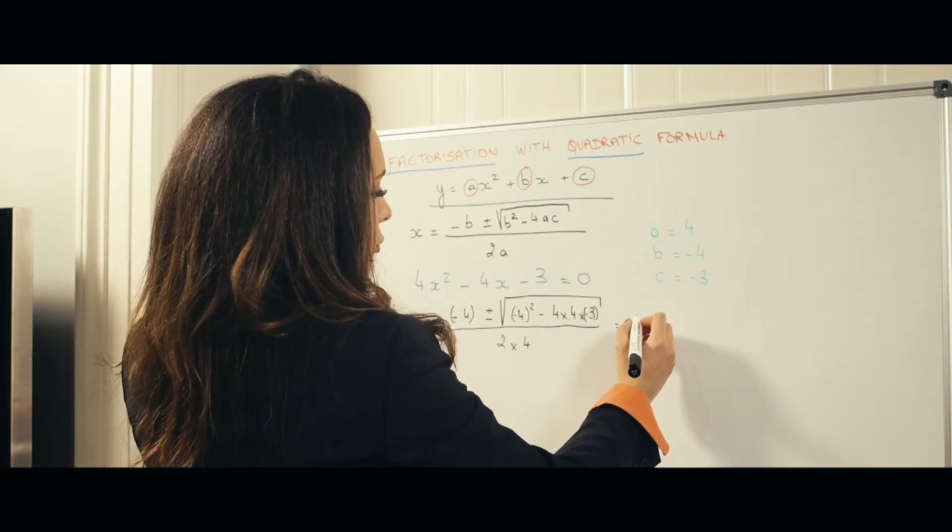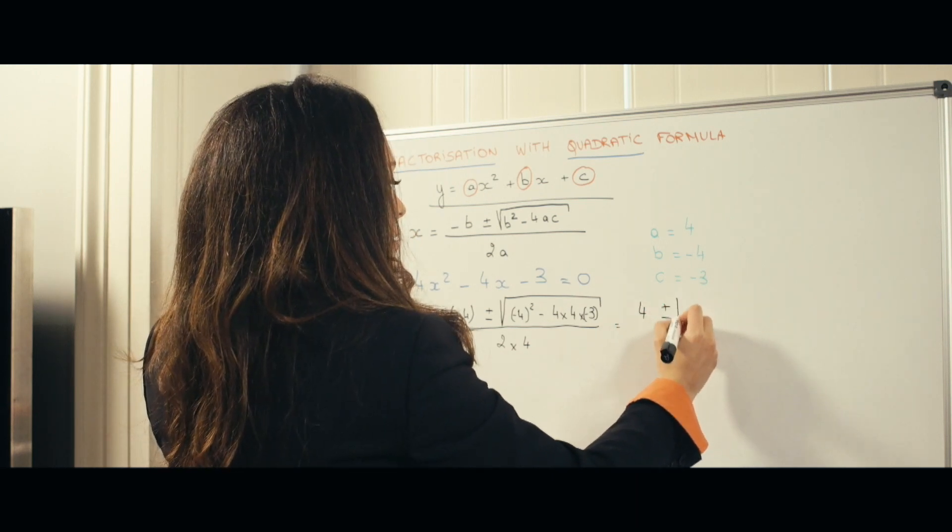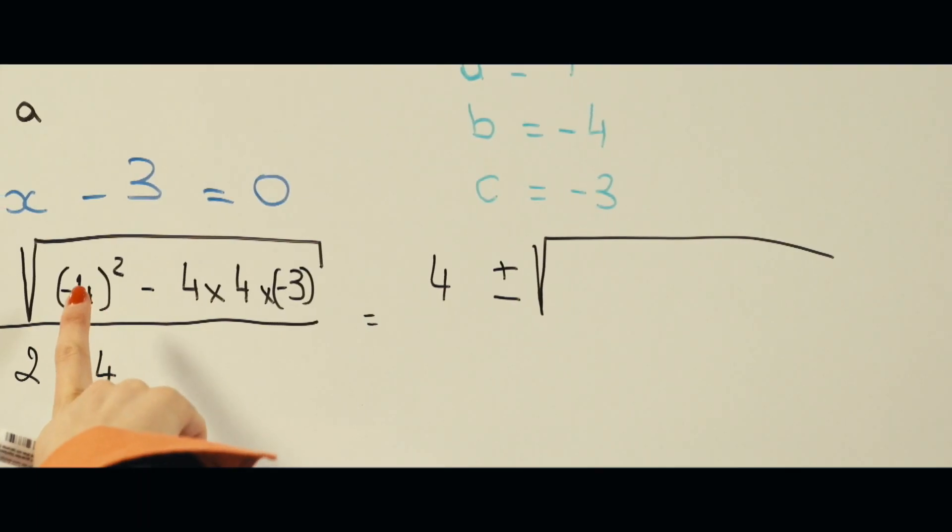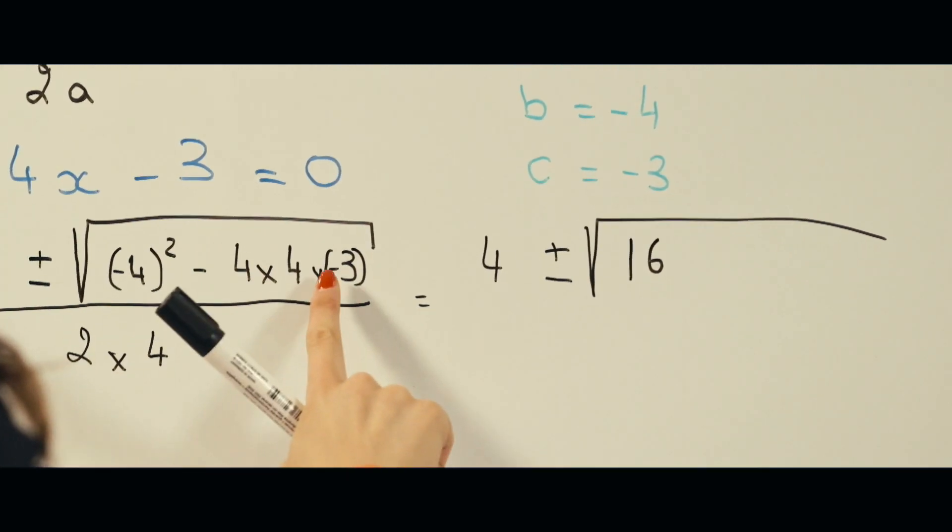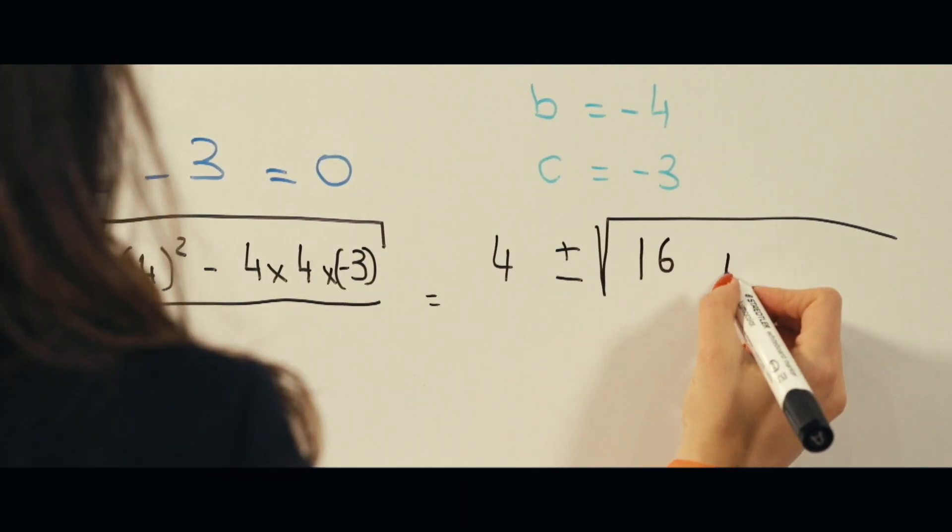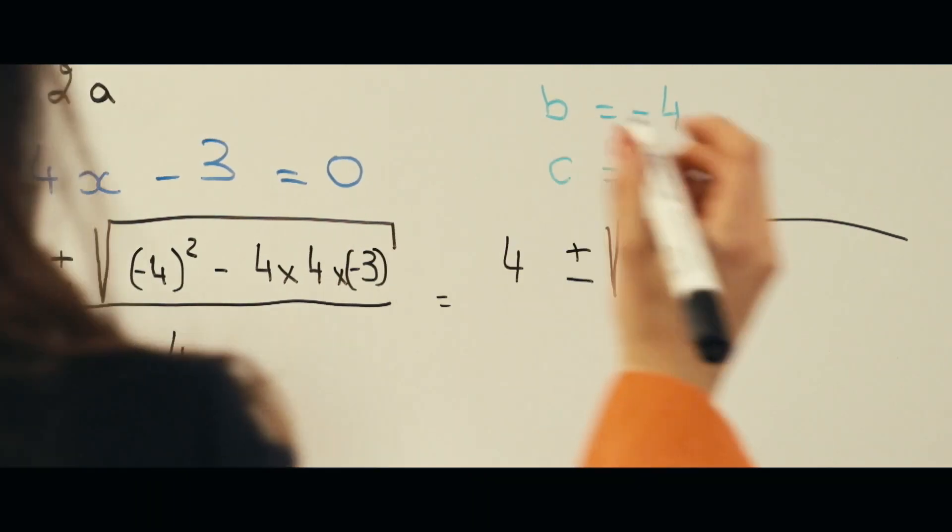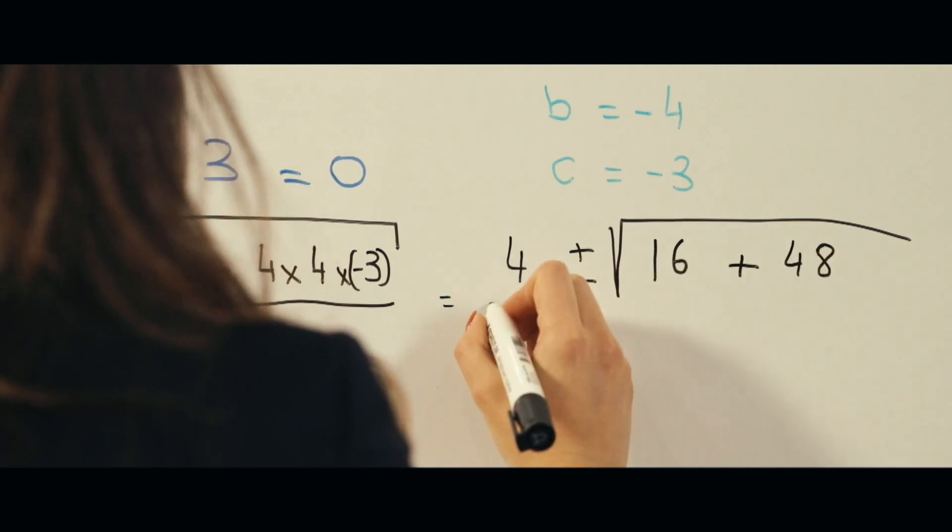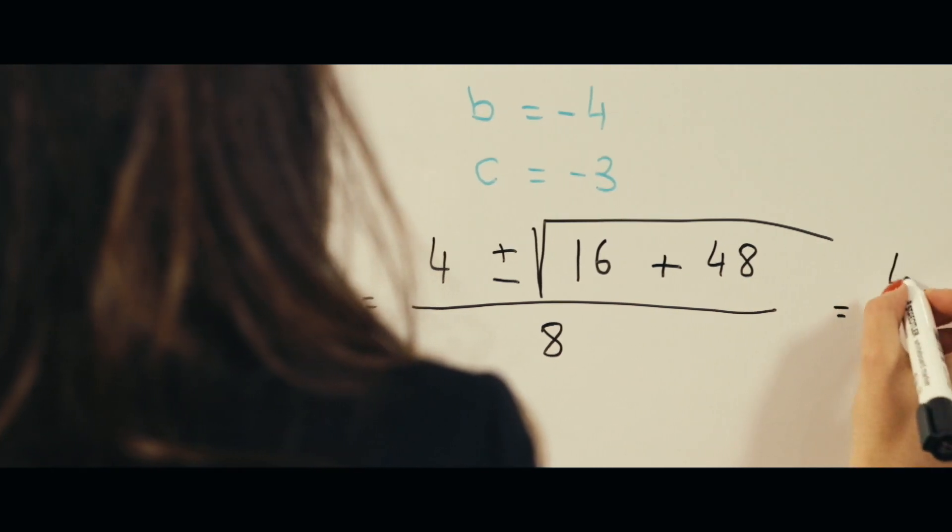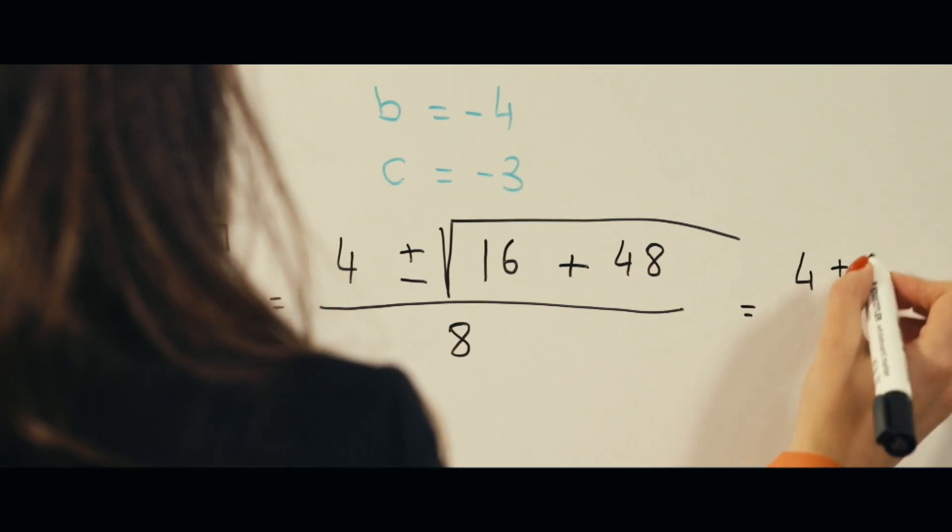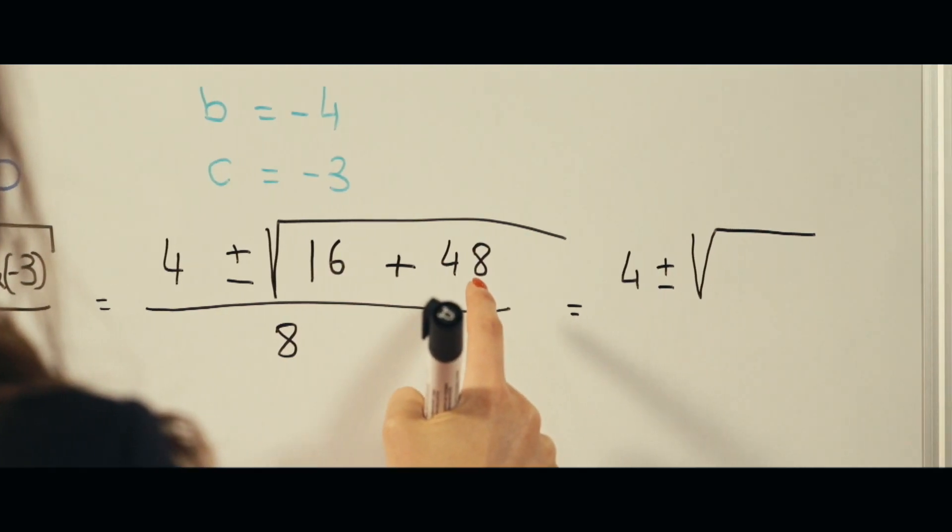Okay, minus minus 4 is plus 4, so 4 plus or minus—minus 4 squared is the same as 4 squared, which is 16. Minus times minus is a plus. 4 times 4 times 3 is 48, and everything here divided by 8, which equals 4 plus or minus square root of 64, divided by 8.